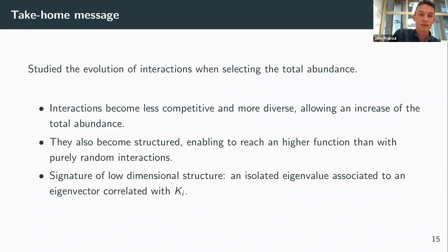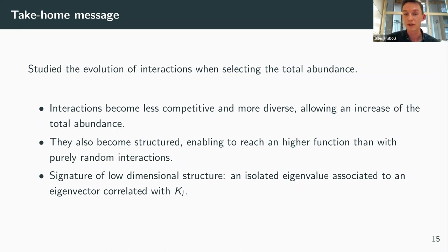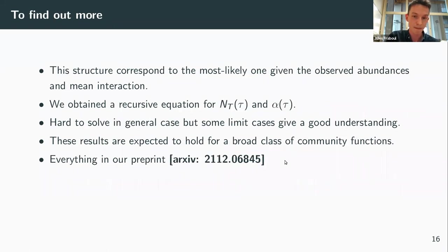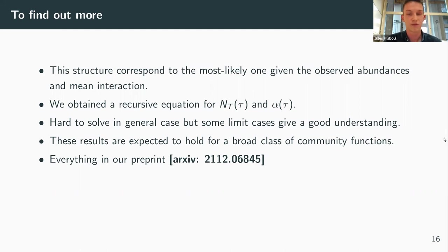To conclude: we studied the evolution of interactions when selecting for total abundance. Interactions became less competitive and more diverse, following an increase in total abundance. They also became structured, enabling a higher total abundance than with purely random interactions. The signature of this structure is an isolated eigenvalue associated with an eigenvector correlated with the carrying capacity diversity. This structure corresponds to the most likely one given the observed abundance and mean interaction. We have a recursive equation for the total abundance and interaction matrix that is hard to solve in general, but limit cases provide good understanding, and this result is expected to hold for a broad class of community functions.